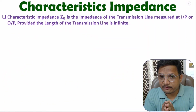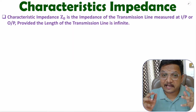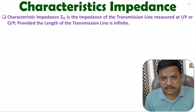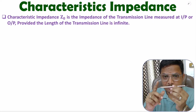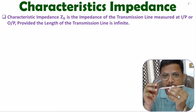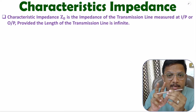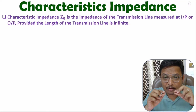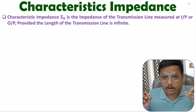Hello friends, welcome to Engineering Funda. In this video I'll explain characteristic impedance of a transmission line and derive it. Characteristic impedance is the impedance of a transmission line provided the length of the transmission line is infinite. If you measure impedance from the input or output of an infinitely long transmission line, that measured impedance is the characteristic impedance. So characteristic impedance explains the characteristics of a transmission line.